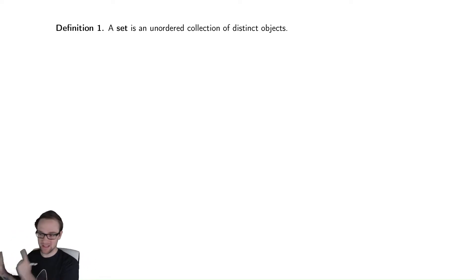So a set, as I've written here, is an unordered collection of distinct objects. That's it. Distinct meaning that they are different.